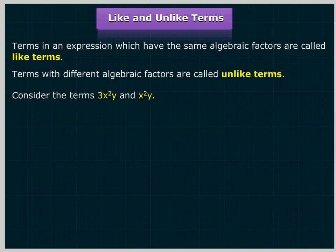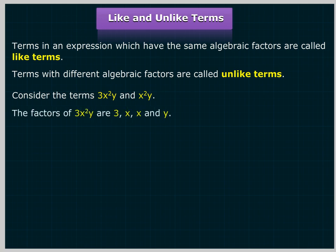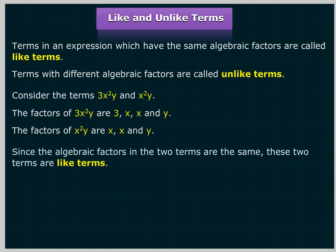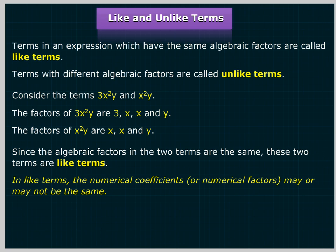Consider the terms 3x²y and x²y. The factors of 3x²y are 3, x, x, and y. The factors of x²y are x, x, and y. Since the algebraic factors in the two terms are the same, these two terms are like terms. In like terms, the numerical coefficients or numerical factors may or may not be the same.